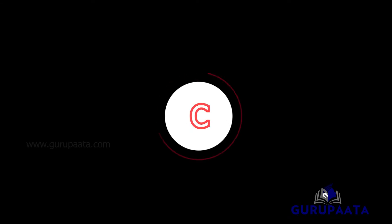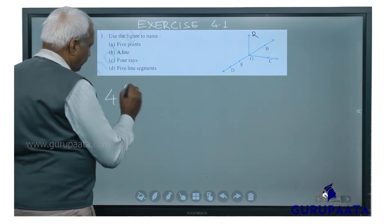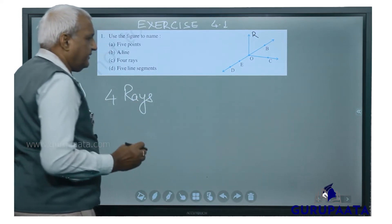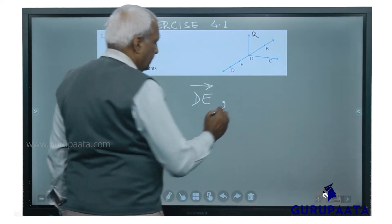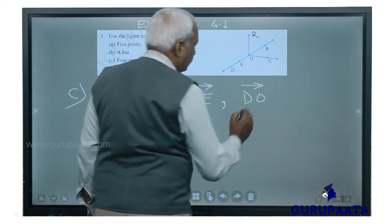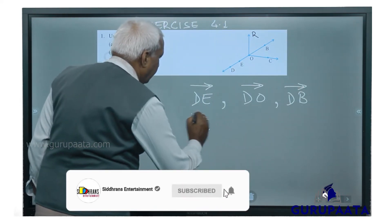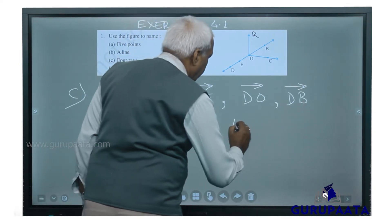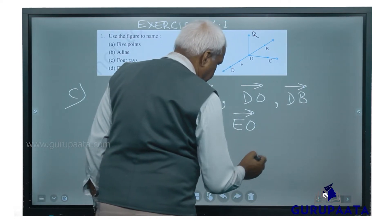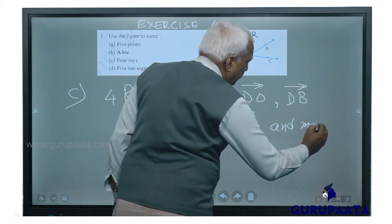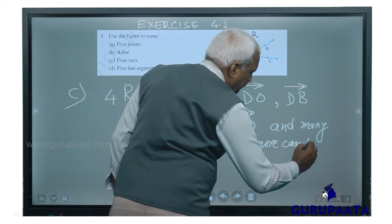We will go for question C — 4 rays. The rays we have are: DE is one ray, DO is another ray, DB is another ray, OC is another ray. And many more can be written.